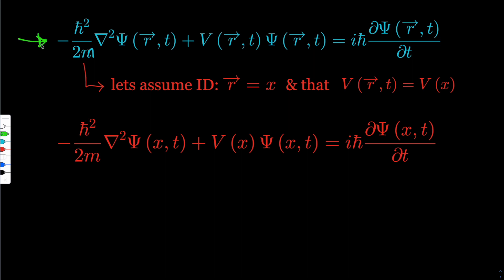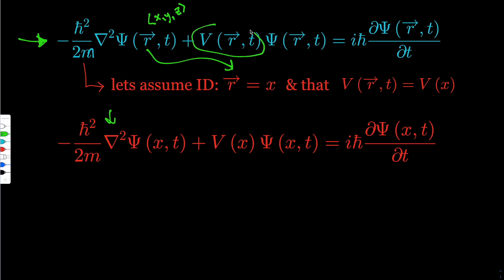Here I have the most general form of the Schrödinger equation. In this example we're going to assume that our vector x, which is a function of x, y, z, is only a function of space — that's just for simplicity for the Laplacian, which we'll talk about in a second. We're also going to assume that, to get the time-independent Schrödinger equation, the potential of our quantum particle is only a function of position and does not change with time.